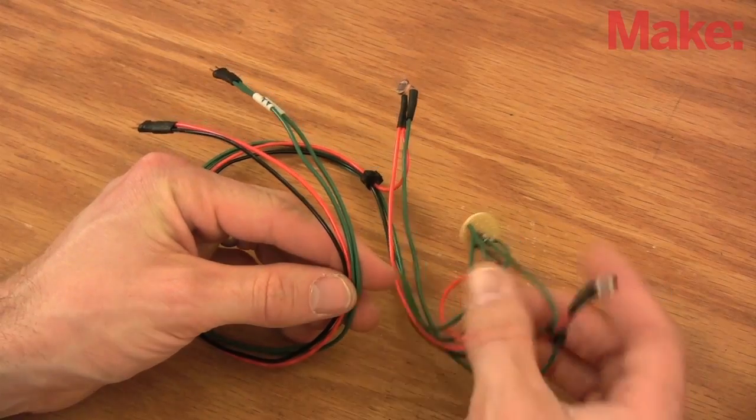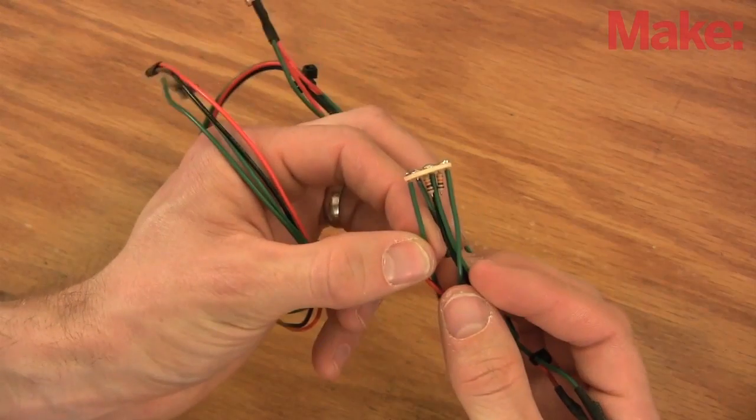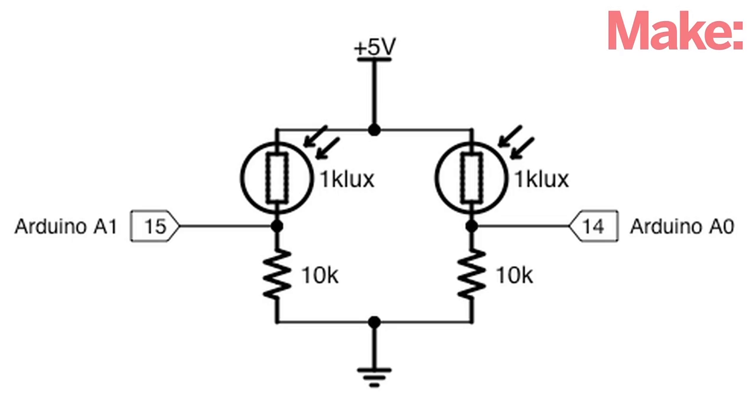I've wired up a couple light-dependent resistors in a voltage divider circuit for measurement and timing by an Arduino. The Arduino will detect a voltage drop that signifies increased resistance caused by the car blocking light as it passes over each resistor.